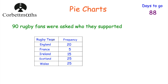We've got the teams: England, France, Ireland, Scotland and Wales, and we've got the frequencies. The first step to draw a pie chart for this information is to add up the frequencies to see how many people there are altogether.